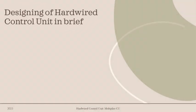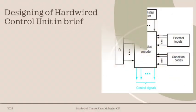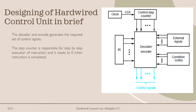Now I am going to explain the designing of a hardwired control unit. As you can see in the diagram, the decoder and encoder generate the required set of control signals. The step counter is responsible for step-by-step execution of instructions and it resets to 0 when an instruction is completed.